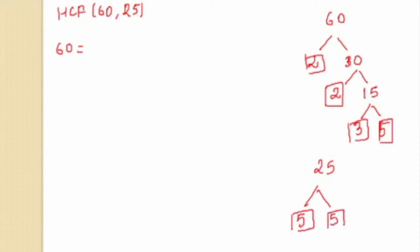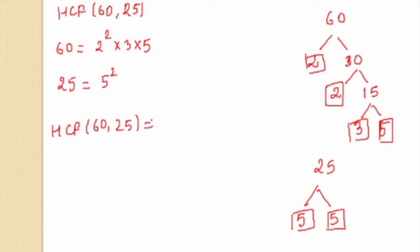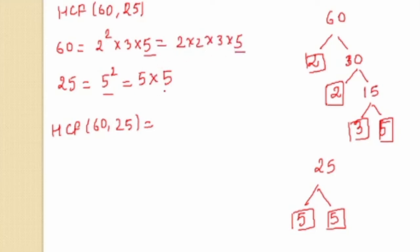So 60 = 2² × 3 × 5. For 25, the smallest prime that divides it is 5, giving 25 = 5 × 5 = 5². Now to find the HCF, look for primes common to both factorizations. The only common prime is 5. Taking the smallest power of this common prime, the HCF = 5.